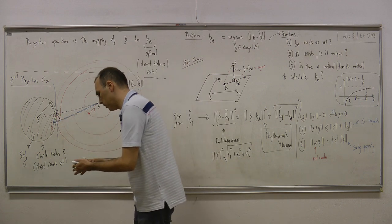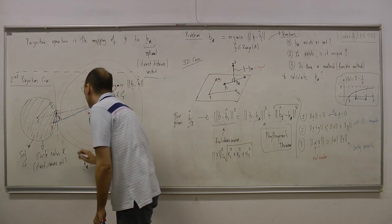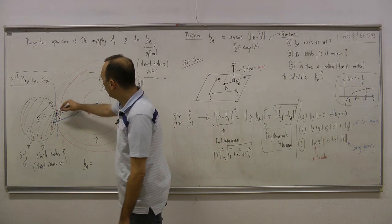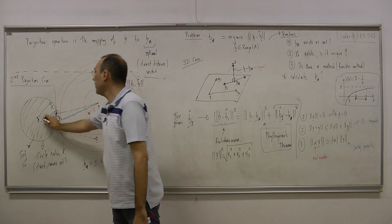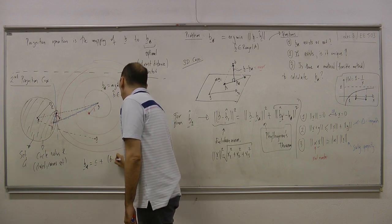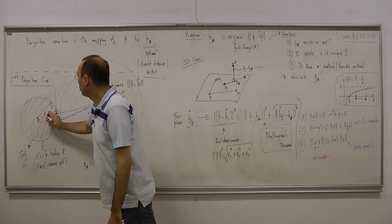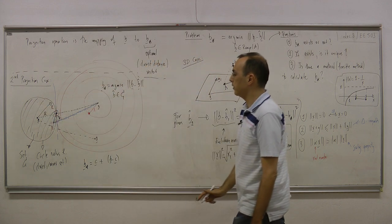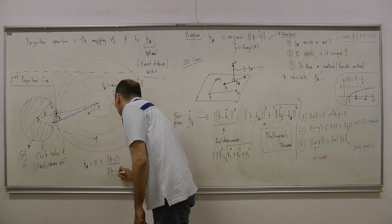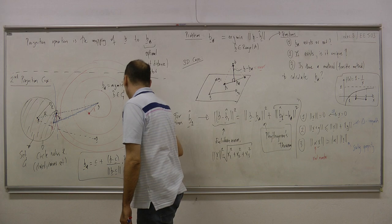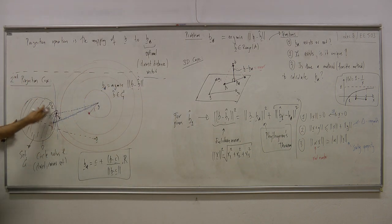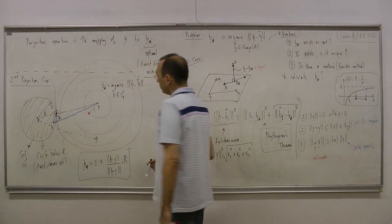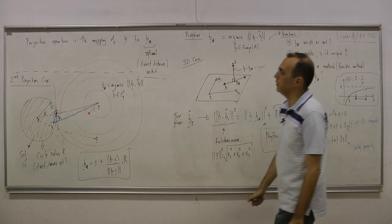How do I find b* analytically? Let my origin be somewhere. The optimal point is c plus a vector pointing from c toward b of norm r. So: b* = c + r · (b − c) / ‖b − c‖. That is the solution to the second projection case, where the constraint set is a closed circle.